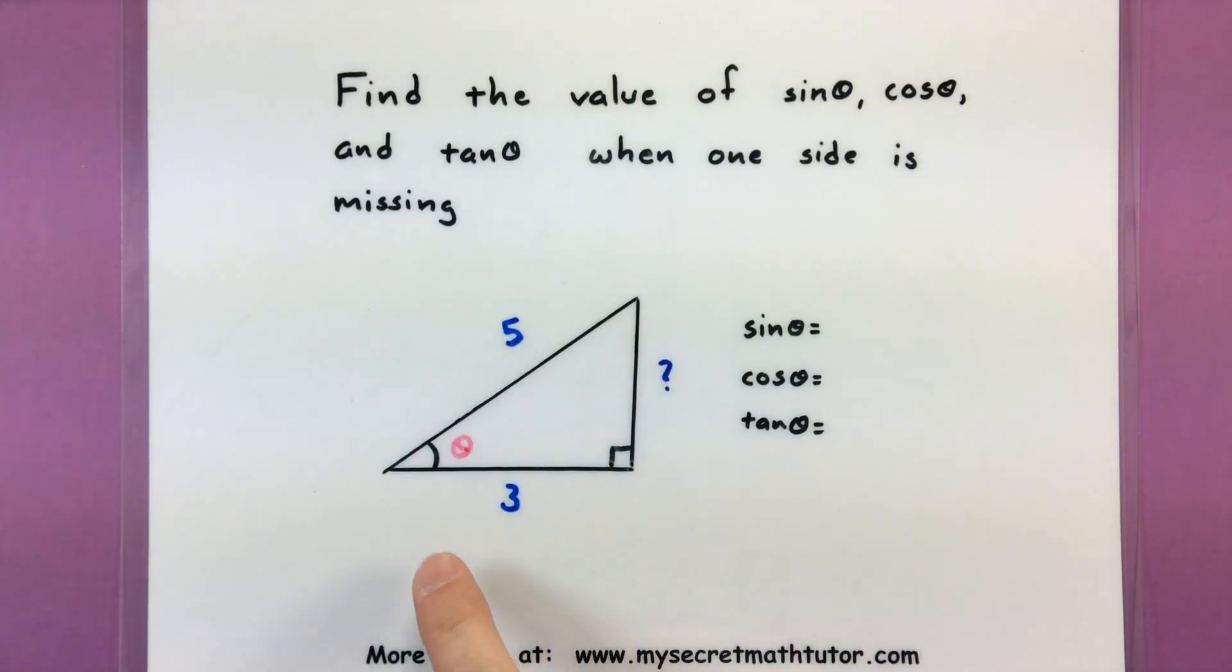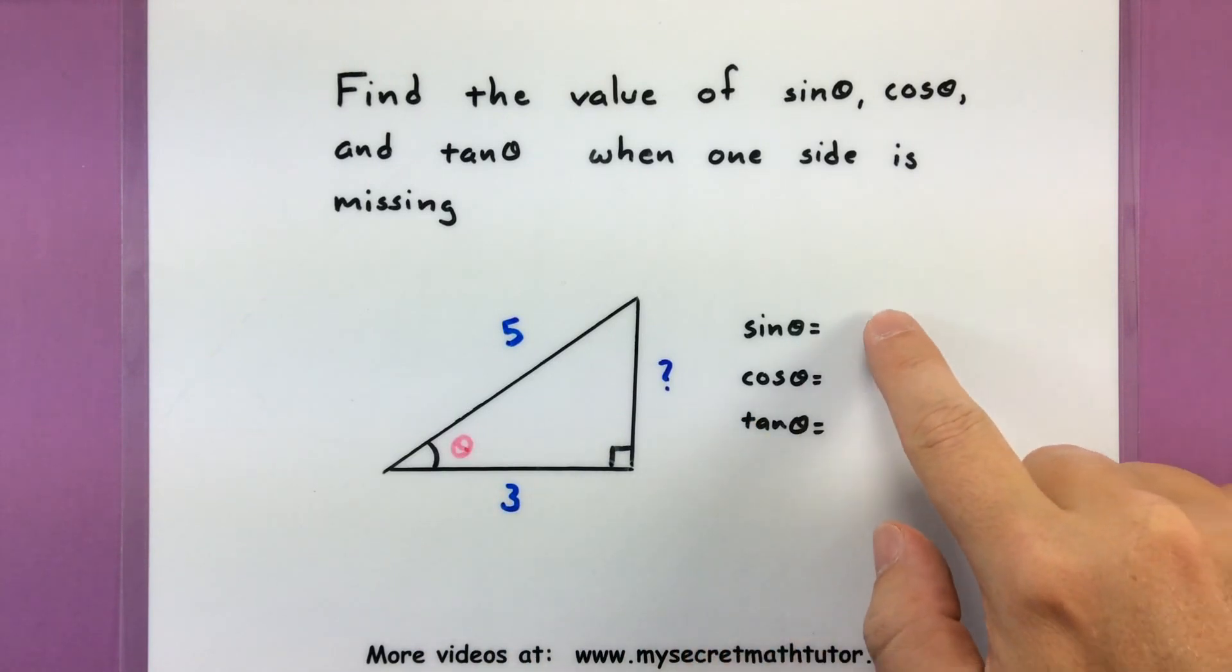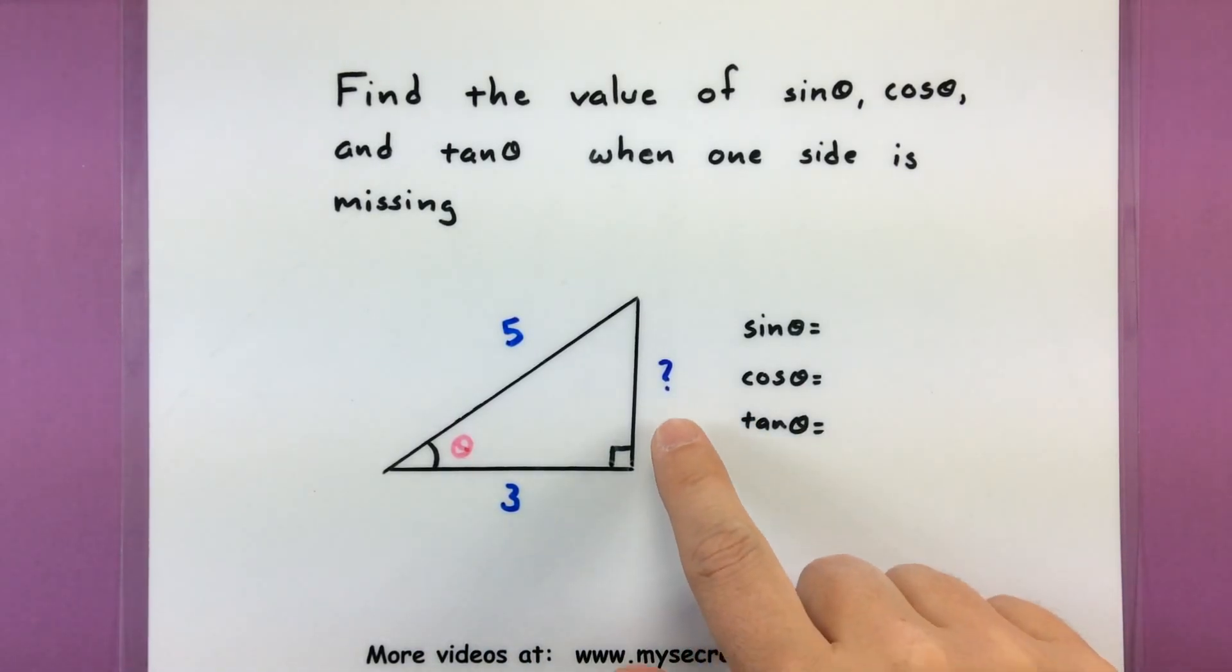So chances are you may have come across a few instances where you need to find the value of sine, cosine, and tangent, but you can't form all of your ratios because a single side is missing.